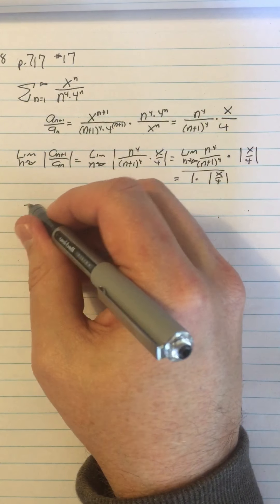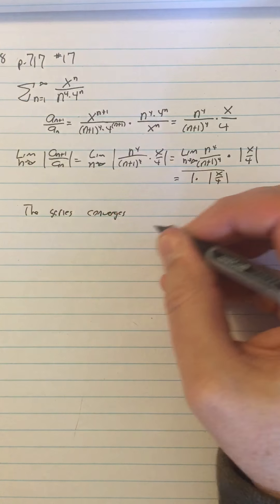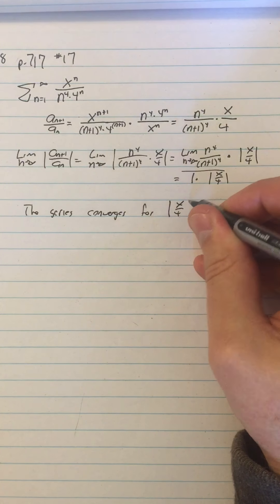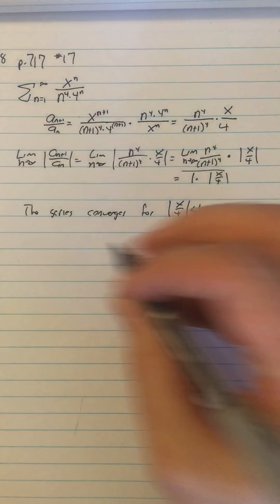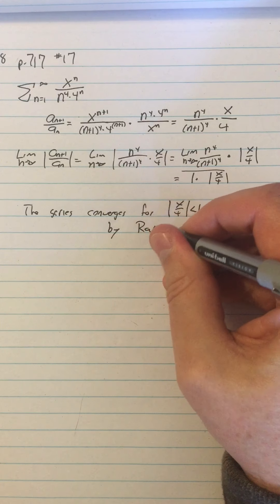So the series converges for absolute value of x over 4 less than 1. And at some point, if I'm justifying this fully, I should say by ratio test.